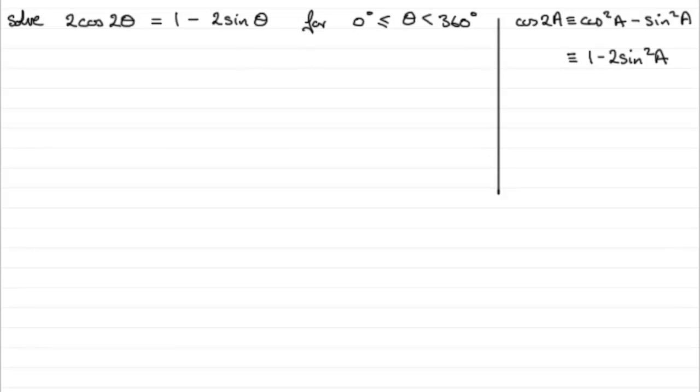Because what we can do is change this then to, well, leave the 2 there, but multiply by, instead of cos 2θ, the θ being the a, we can write this as 1 - 2sin²θ. And this is equal to the 1 - 2 sin θ here. So you can see what we've achieved is the same angle, θ, and the same trigonometric function, sine. And this is good.